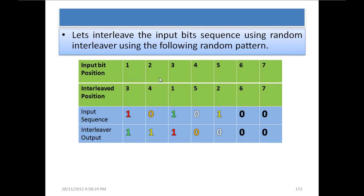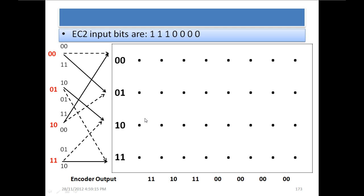After interleaving, the input sequence has changed. It has now become 1, 1, 1, 0, 0, 0, 0. So encoder 2's input bits are 1, 1, 1, 0, 0, 0, 0.